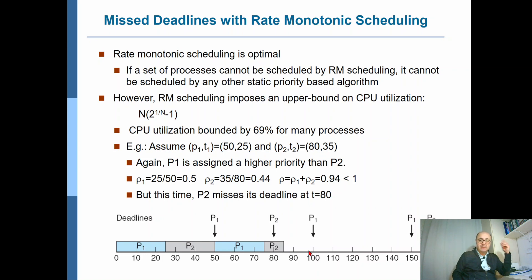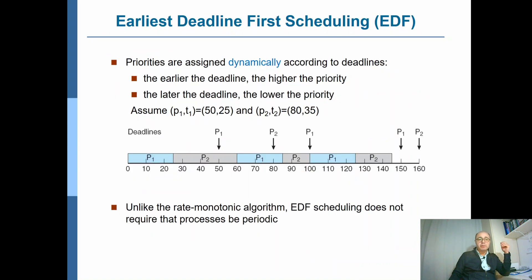And that's the idea with EDF. As the name implies, this time we base the priority on the deadline rather than the period. So looking at the very same problem with the same values, at t equals 0, p1 will be scheduled first because p1 has the closest deadline. p2 has a deadline at 80, but p1 has it at 50, so we give the CPU to p1, and p1 completes.